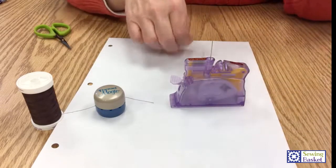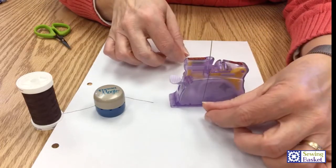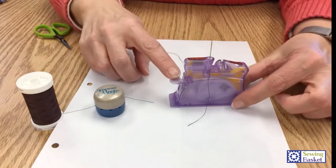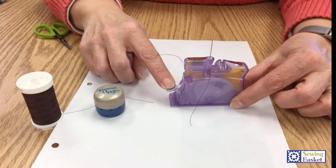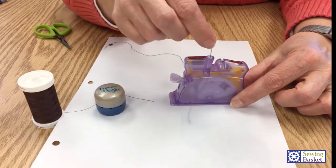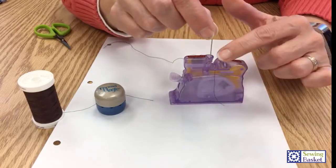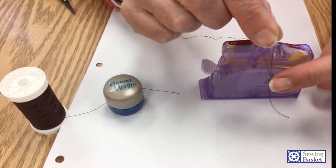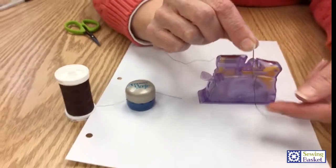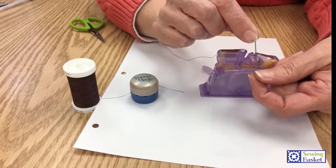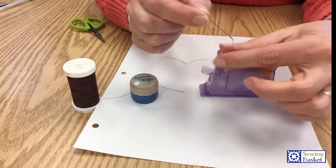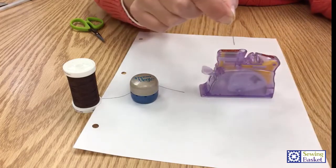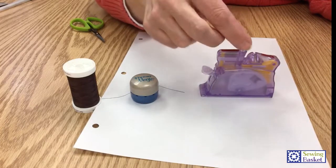Then I'm going to lay my thread in this groove and push the button here. What it does is there's a little wire in there that's going to push just a little loop through the eye of your needle. So now I can just grab that loop and my needle is threaded.